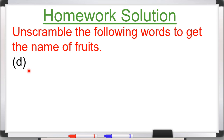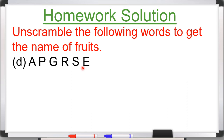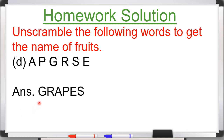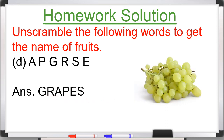Part D: A-P-G-R-S-E. These alphabets are given in jumbled form. When you arrange them in the correct order, which fruit name is formed? That will be Grapes — G-R-A-P-E-S. See the picture of grapes here.